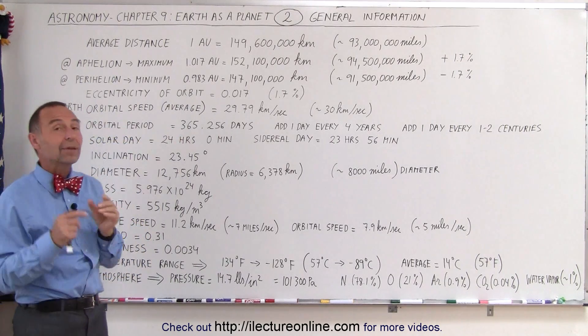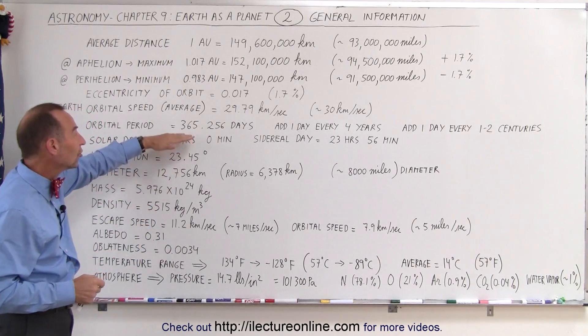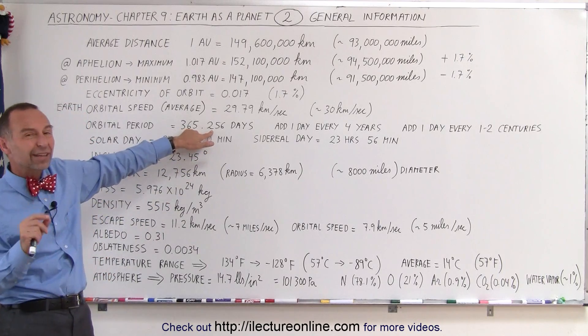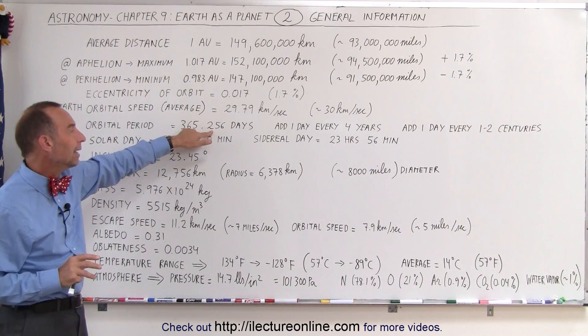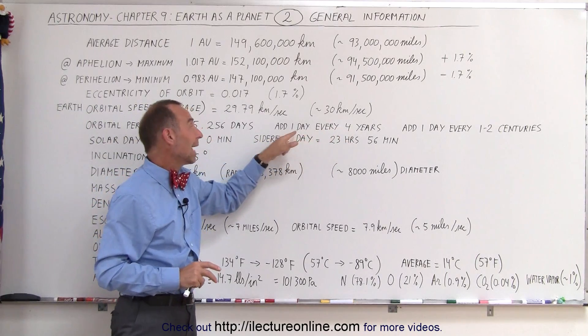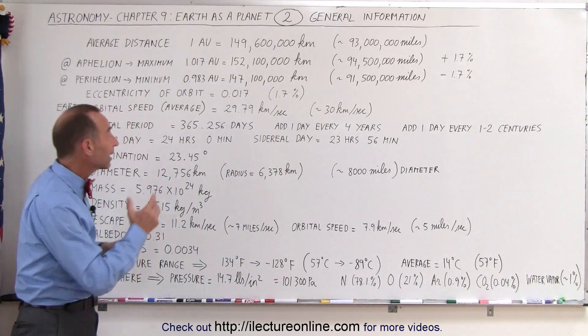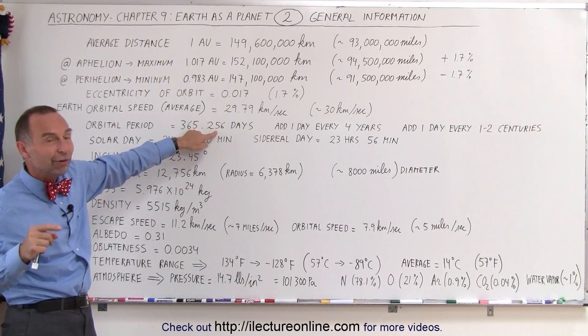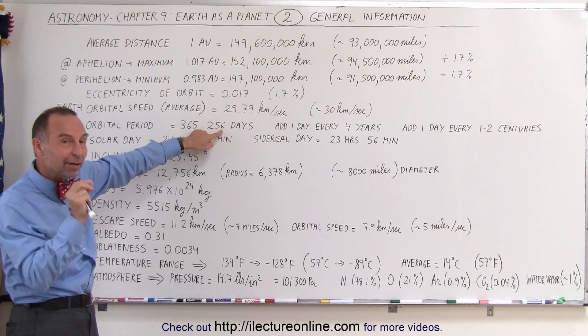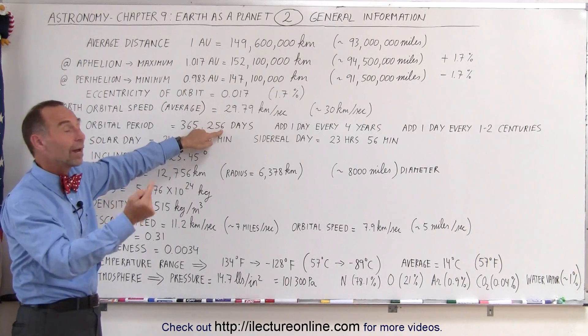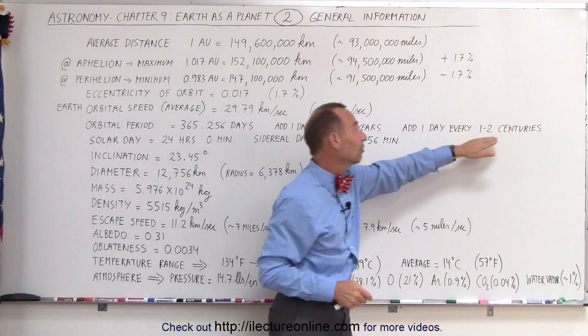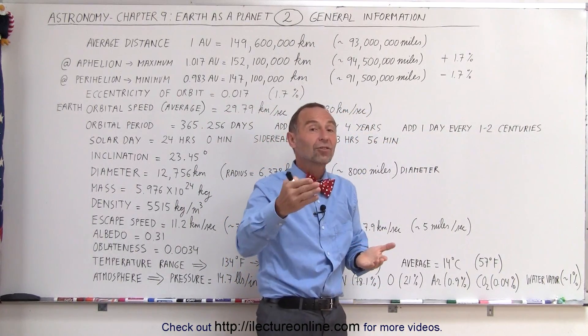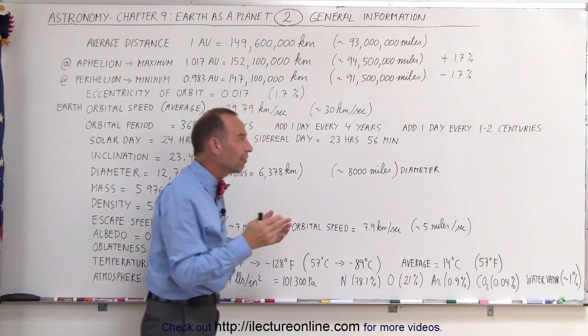Orbital period is the time that it takes for the Earth to make one trip around the Sun. Notice it's 365.256 days. 0.256 is about a quarter of a day, which means that every four years we need to add one day to the calendar to kind of stay paced with the orbital period of the Earth. But it's not quite 0.25, it's 0.256. That extra little bit of time that it takes for the Earth to go around the Sun means that every one to two centuries, we need to add one more day to the calendar to compensate for that. Otherwise, over the thousands of years, our calendar would be quite off by quite a bit.